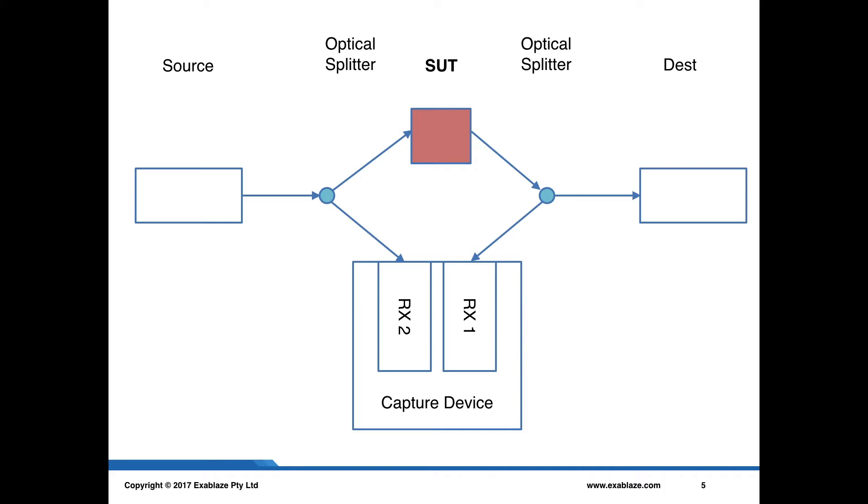On this slide I have a diagram of how you would usually do this sort of network measurement. We have a system under test which is the red box there. We have a source of packets going into an optical splitter, a second optical splitter and a destination. And both of those optical splitters send packets into a capture device which is what we're using for doing our measurements. Now let's assume for the sake of argument that all of the fibers are exactly the same length in this setup.